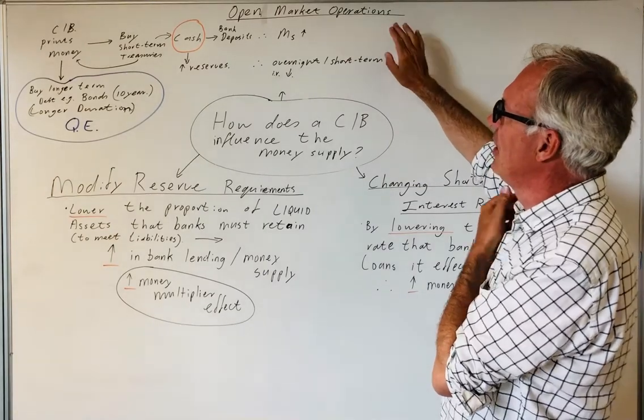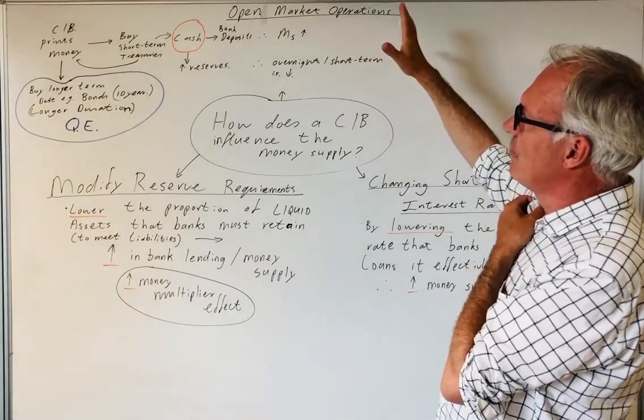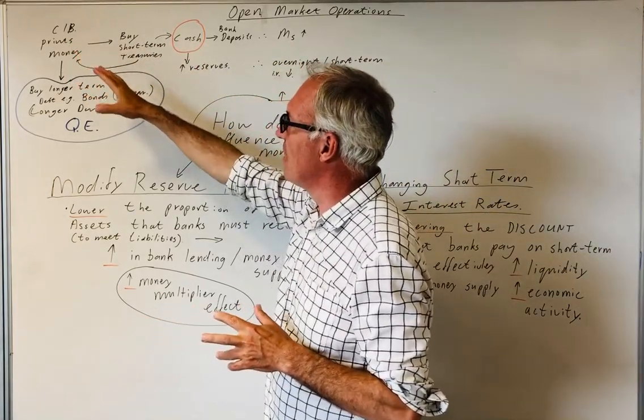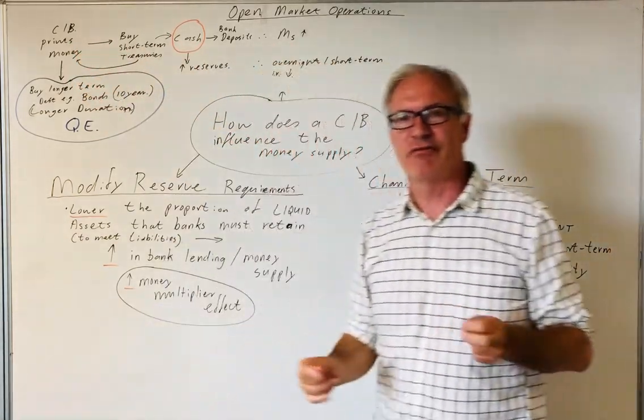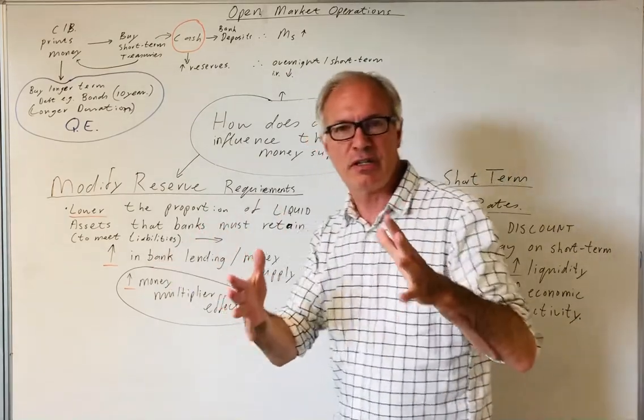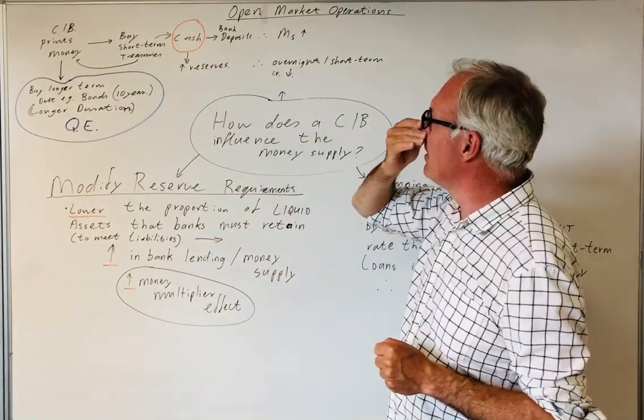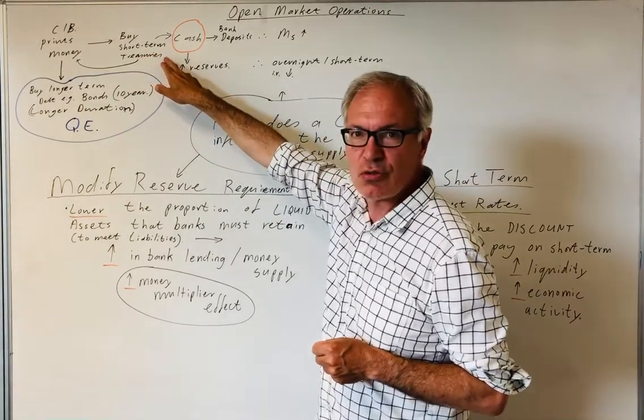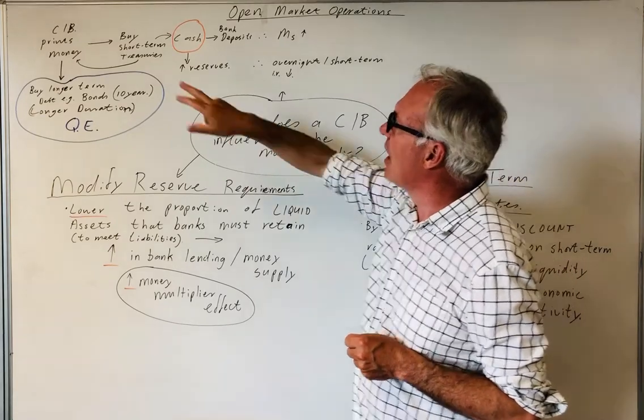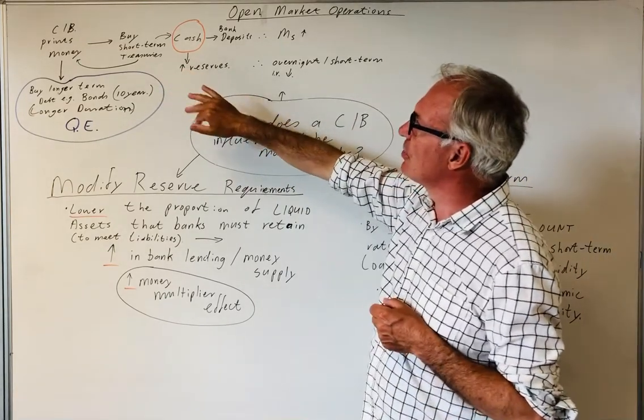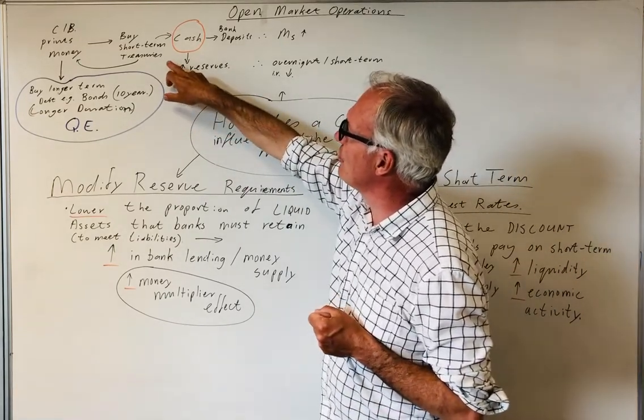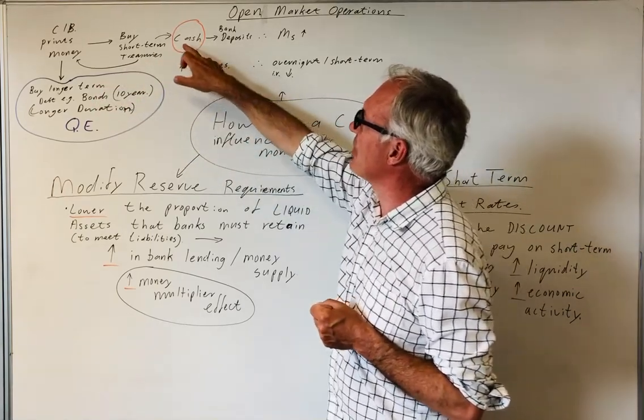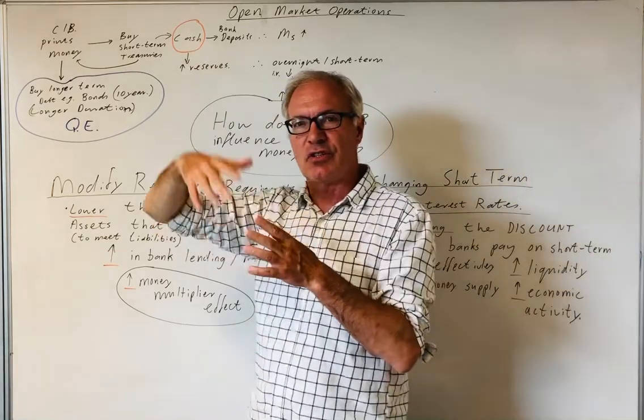However, a third method which is important is open market operations. To start with, open market operations is where the central bank prints money—it doesn't have to physically print notes and coins, it can create this money electronically—and then it can buy short-term government stock, short-term treasuries.